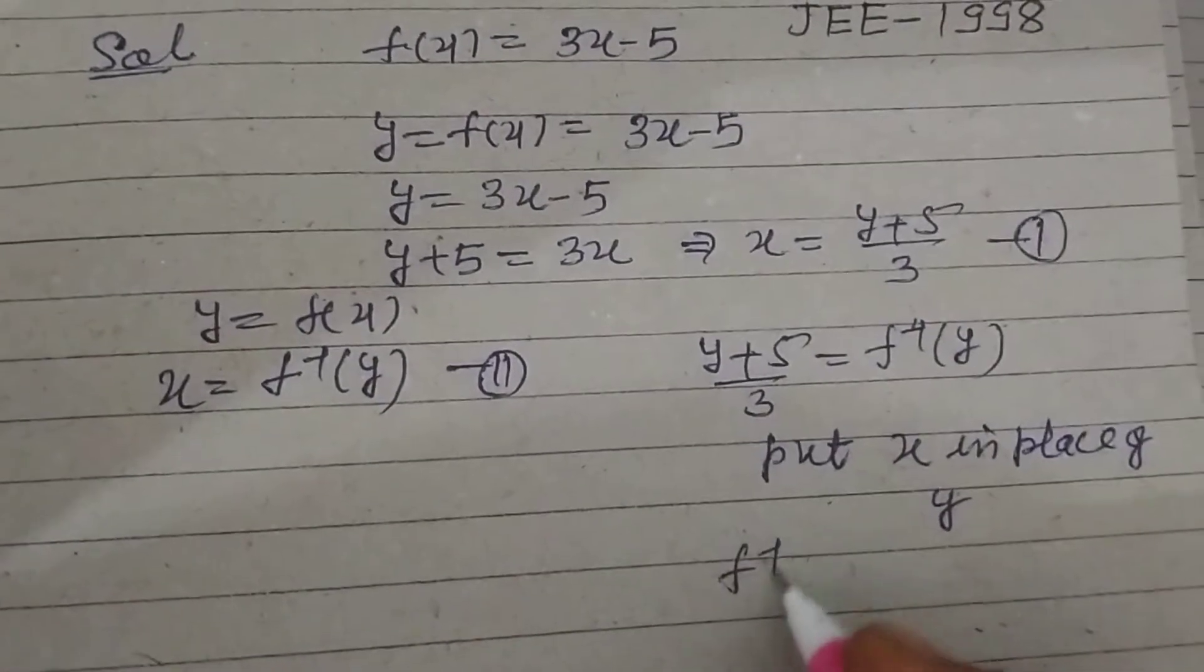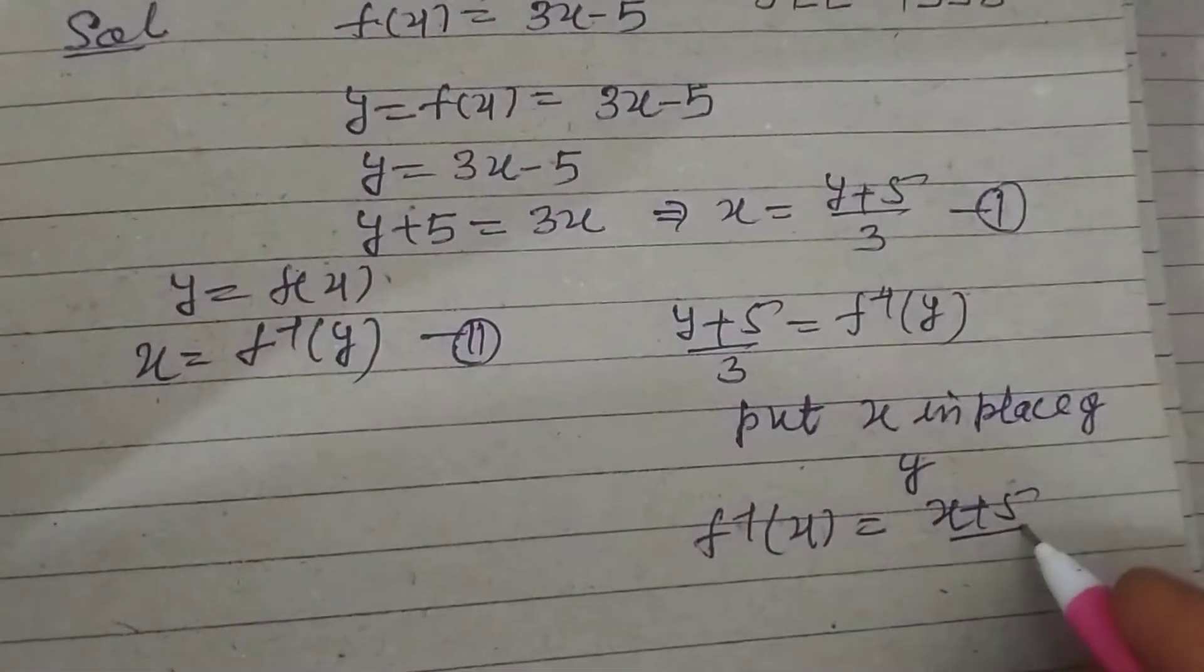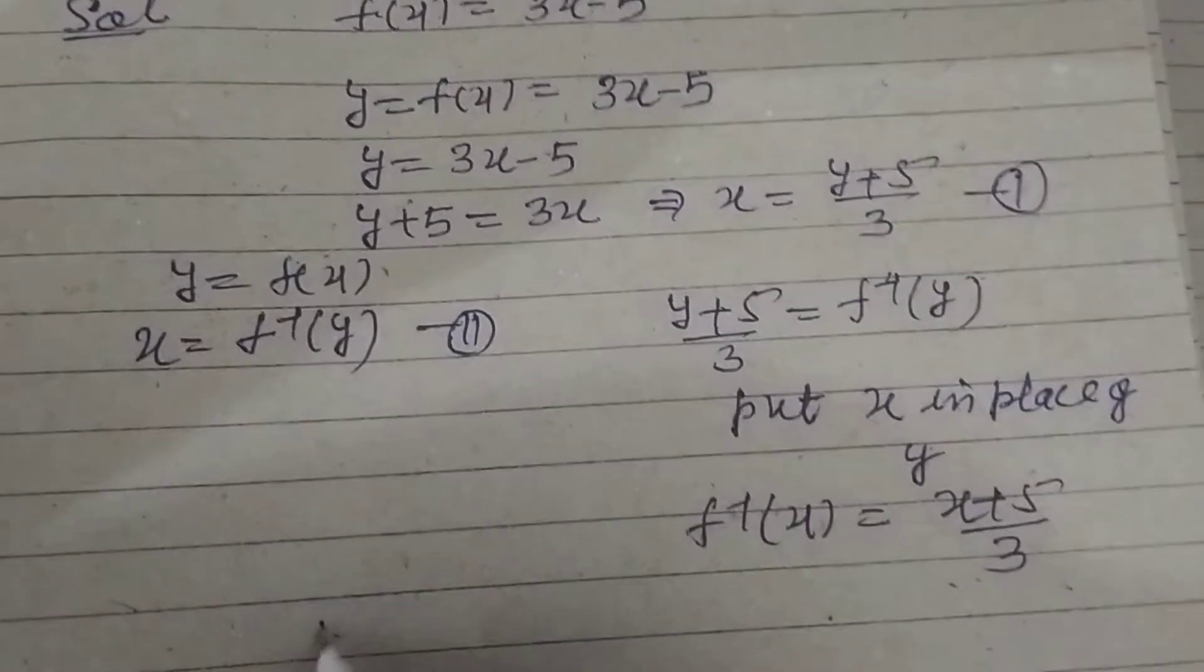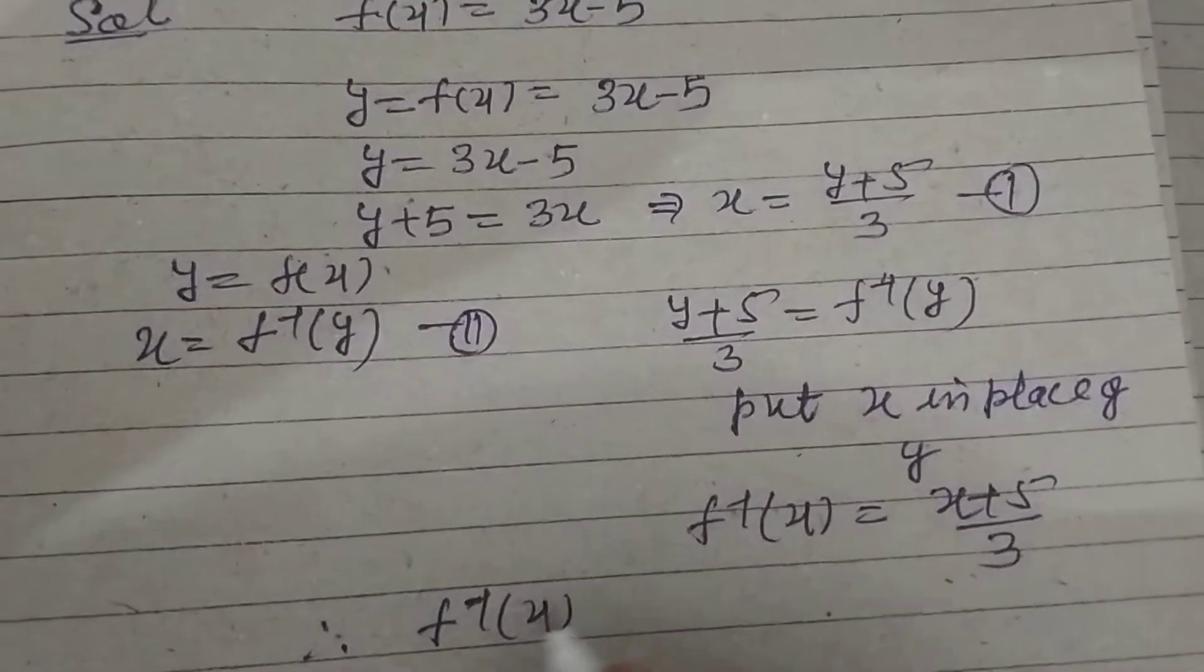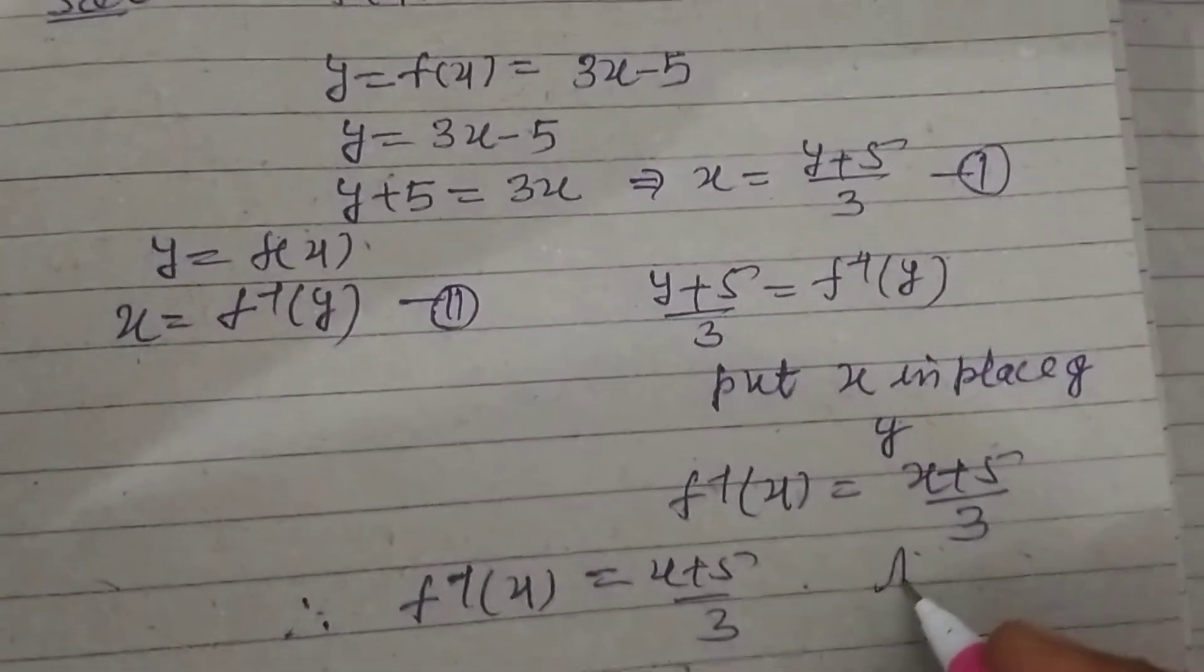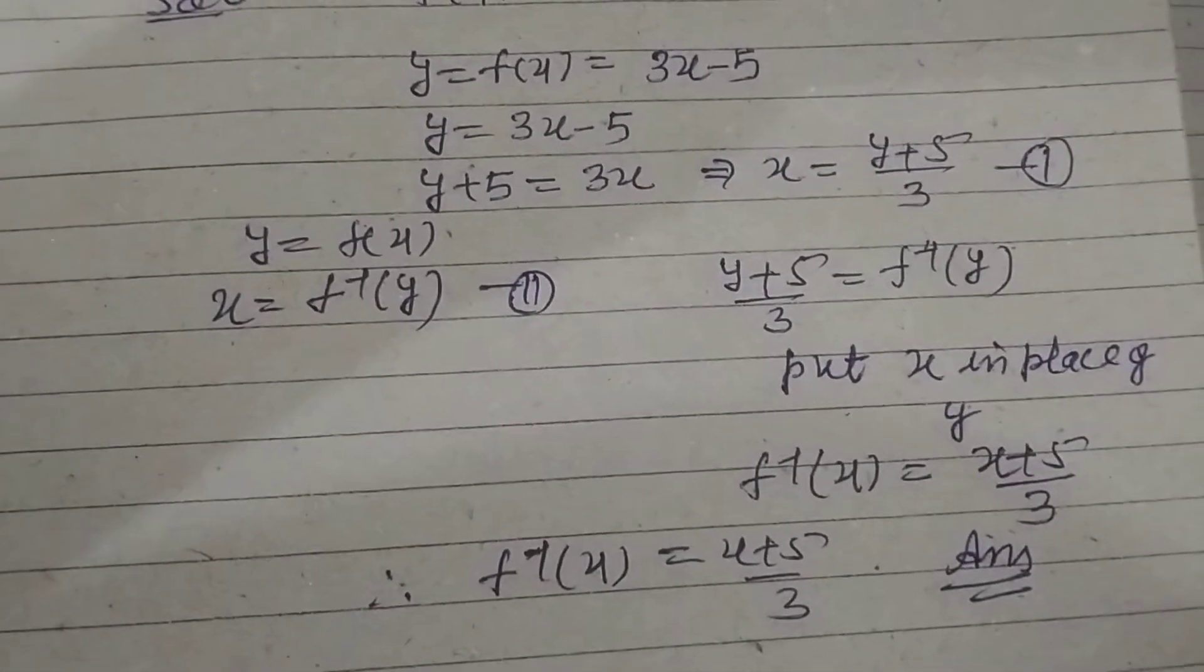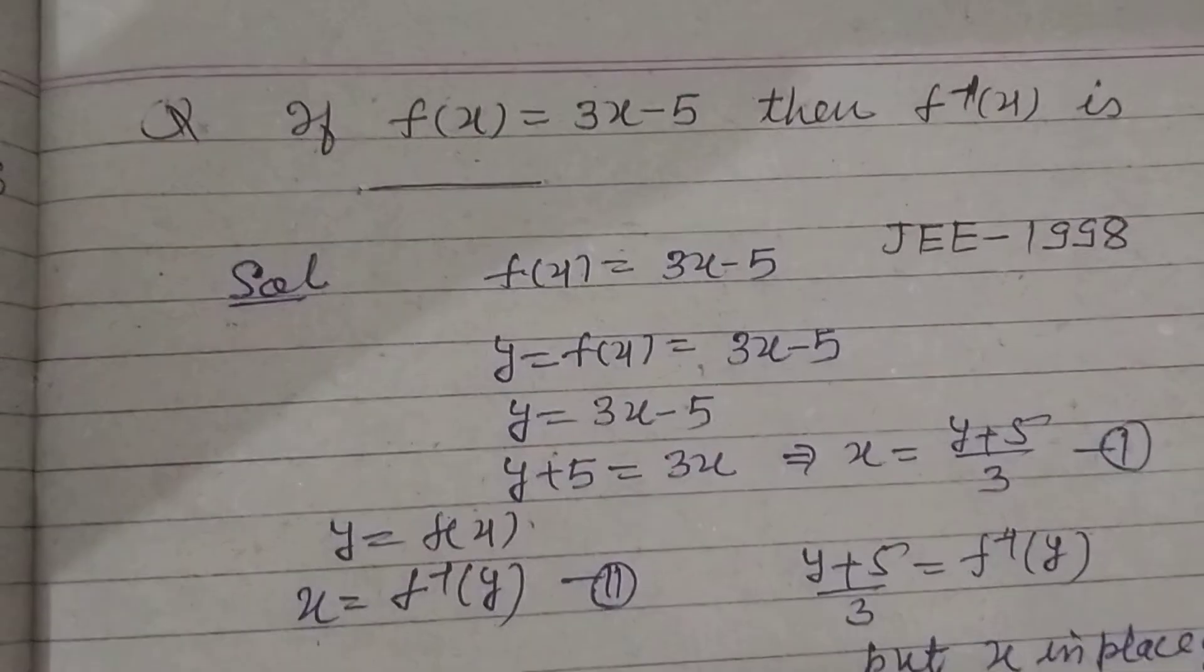We got f inverse x equals x plus 5 by 3. So this is the function inverse of the function f(x): f inverse x equals x plus 5 by 3, and this is our answer. So student, in this way we solve this problem. I hope you got it. Please like the video, subscribe the channel, thanks for watching.